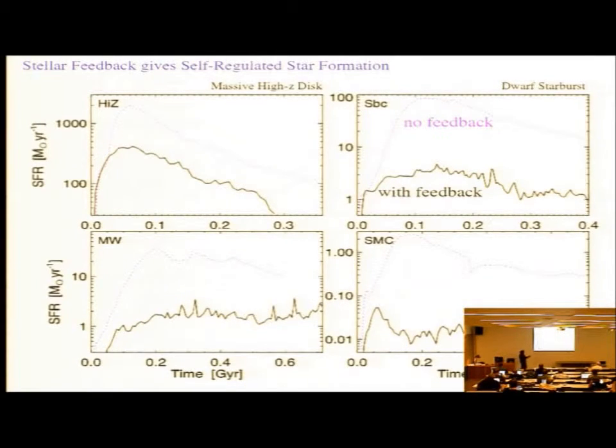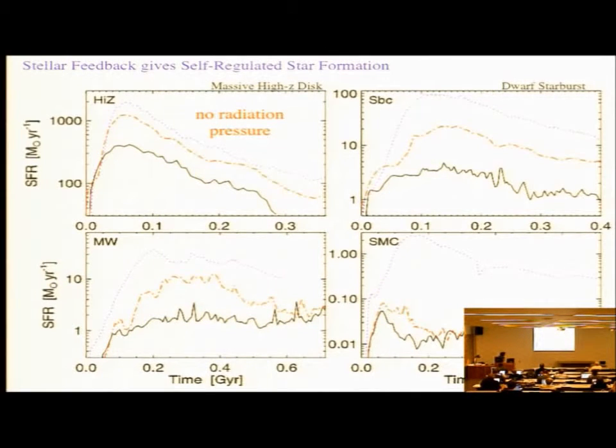What do the star formation rates look like when you implement these different mechanisms? These are four different galaxy models. Here's the SMC that we just saw. This is a Milky Way analog. This upper right is a dwarf starburst M82 analog. And this high Z model is an attempt to mock up one of these extremely high star formation rate, high surface density, clumpy, high redshift disks. In each case, the purple dotted line is what happens when you have no feedback. It catastrophically collapses at arbitrarily high densities. When we turn all of these mechanisms on, you see a huge suppression in star formation rates.